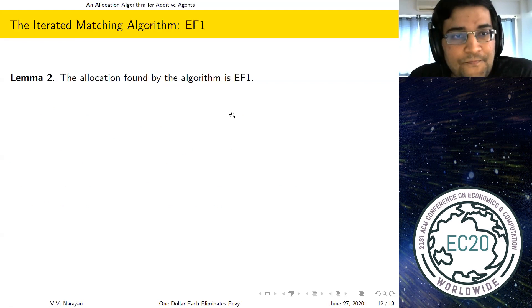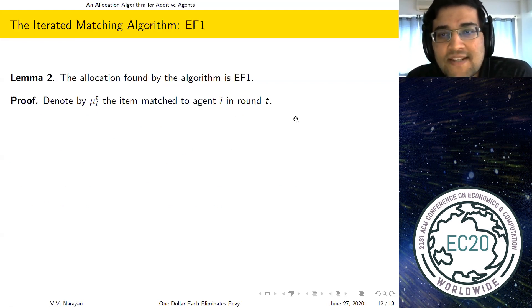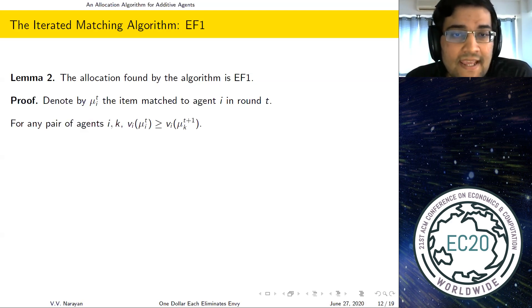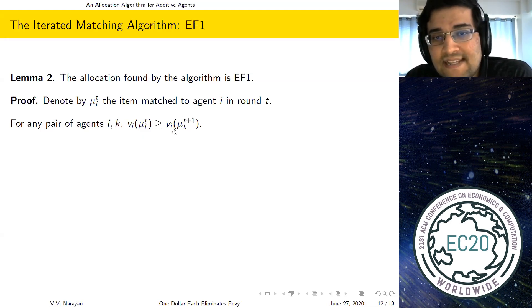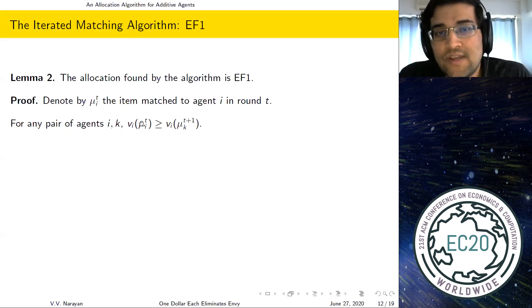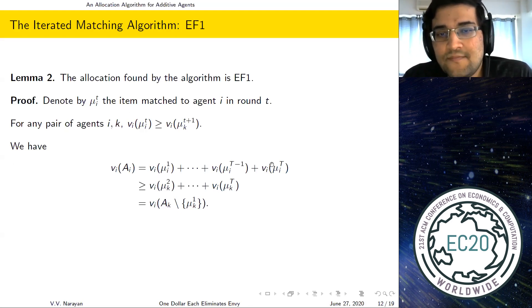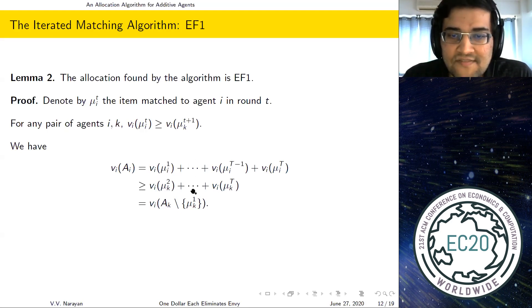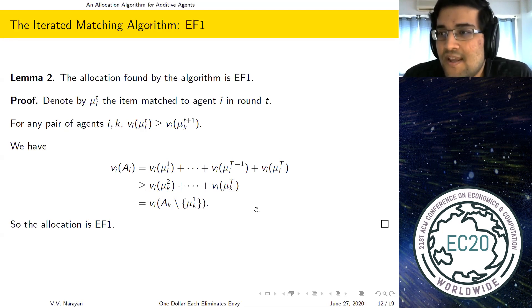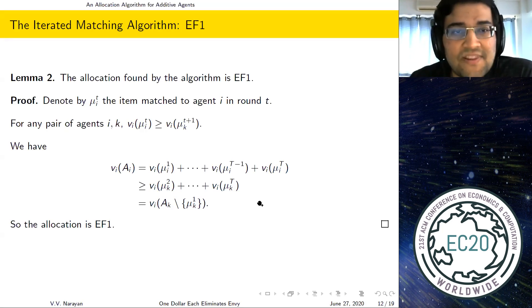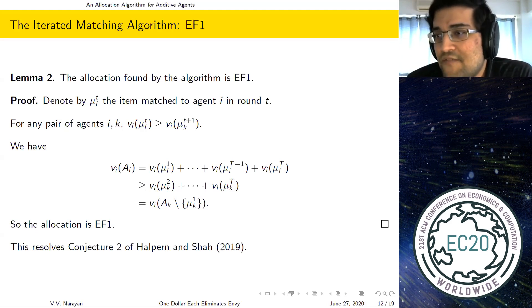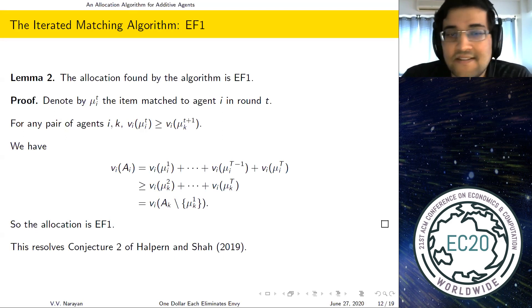We can also show the allocation is EF1. Let μ_{i,t} denote the item matched to agent i in round t. For any pair of agents i and k, agent i's value for its own item in round t is at least agent i's value for the item agent k gets in round t+1 — because that item was available in round t, so if agent i preferred it, it would have been chosen in the matching. Summing across rounds, agent i's bundle value is at least agent k's bundle value minus one item, which is exactly EF1. This resolves conjecture 2.